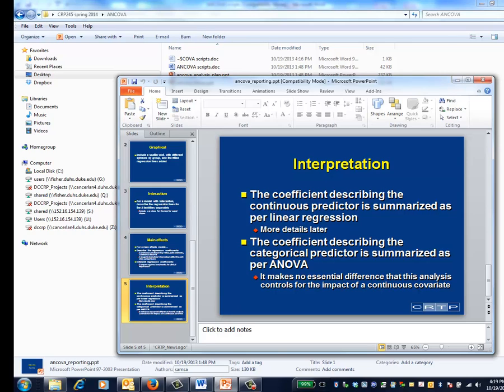And those coefficients still maintain the proper interpretation of having control of the impact of the other. If you like to think about things this way, the continuous predictor is summarized exactly as in simple linear regression, whereas the categorical predictor is summarized exactly as in the one-way analysis of variance.